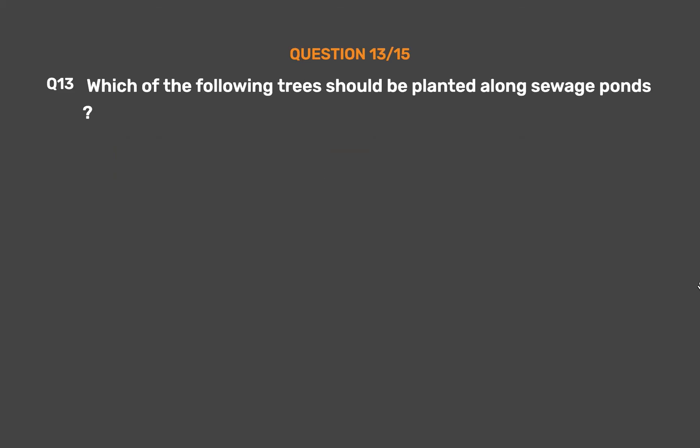Question Number 13. Which of the following trees should be planted along sewage ponds? Option A: Neem. Option B: Eucalyptus.